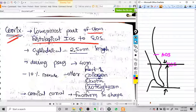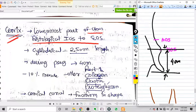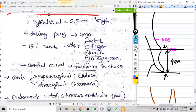The length of the cervix should be 4 centimeters. When it becomes less than 2.5 centimeters, we take it as a shortened cervix.